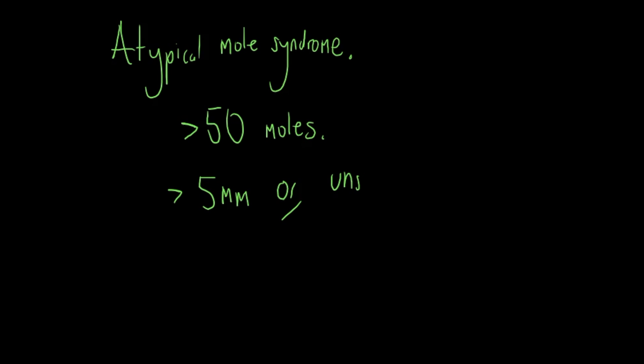Other risk factors include something called atypical mole syndrome. And this is where someone has over 50 moles on their body, and three of these or more are atypical. Atypical in this case means over 5mm or unusual in shape or colour. If you have atypical mole syndrome, you're at a 7 to 10 fold increased risk of melanoma.